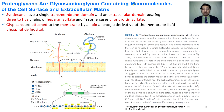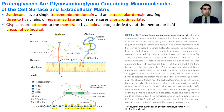Proteoglycans are glycosaminoglycan-containing molecules of the cell surface and extracellular matrix. Syndicans have a single transmembrane domain and an extracellular domain. They consist of three to five heparin sulfate glycans and in some cases chondroitin sulfate glycans attached to the membrane by a lipid anchor, phosphatidylinositol. The syndican structure contains one transmembrane and one intracellular domain, with two to three heparin sulfate chains and two chondroitin sulfate chains.